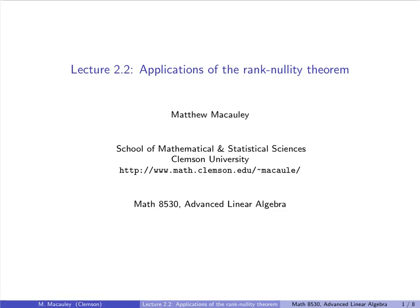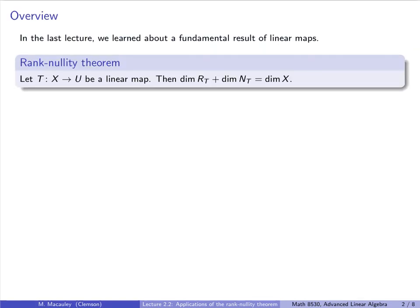Welcome to lecture 2.2, Applications of the Rank Nullity Theorem. In the last lecture, we learned about a fundamental result of linear maps, aptly called the Rank Nullity Theorem. This says that if T is a linear map from X to U, then the dimension of the range, which is called the rank, plus the dimension of the null space, which is called the nullity, equals the dimension of X. Remember that the range lives in U, and the null space lives in X.